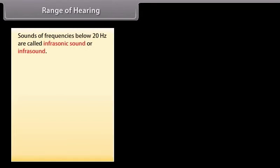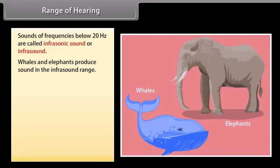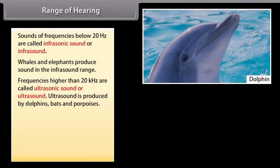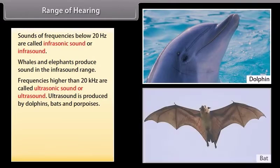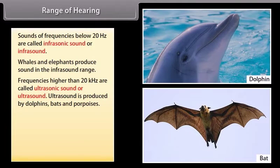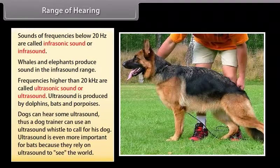Sounds of frequencies below 20 hertz are called infrasonic sound or infrasound. Some animals like whales and elephants produce sounds in the infrasound range. Frequencies higher than 20 kilohertz are called ultrasonic sound or ultrasound. Dogs can hear some ultrasound. Thus a dog trainer can use an ultrasound whistle to call his dog. Ultrasound is even more important for bats because they rely on ultrasound to see the world.